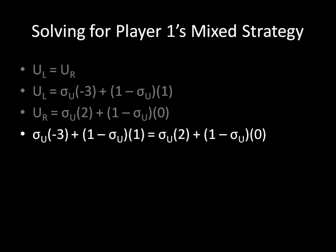Now we have one equation with one unknown variable, so we can solve for it quite easily. And I have done all the algebra here for you already to show you that player 1's mixed strategy is going to play up 1 sixth of the time, and to play down 5 sixth of the time.